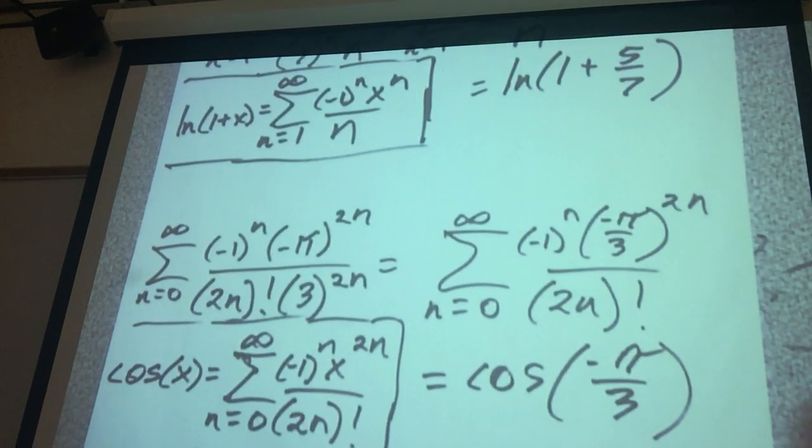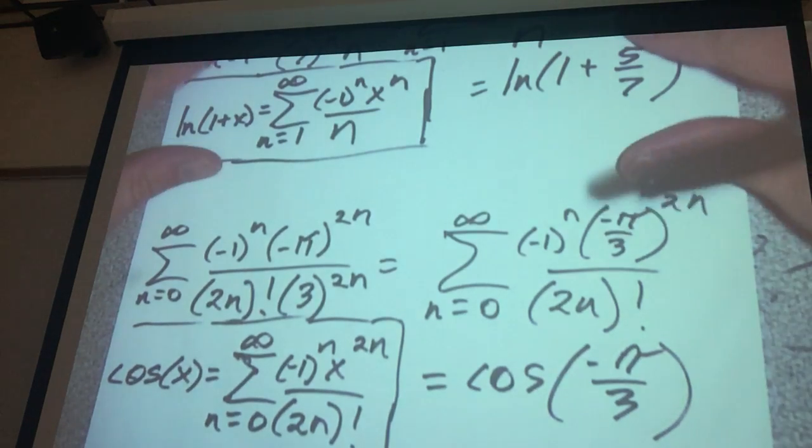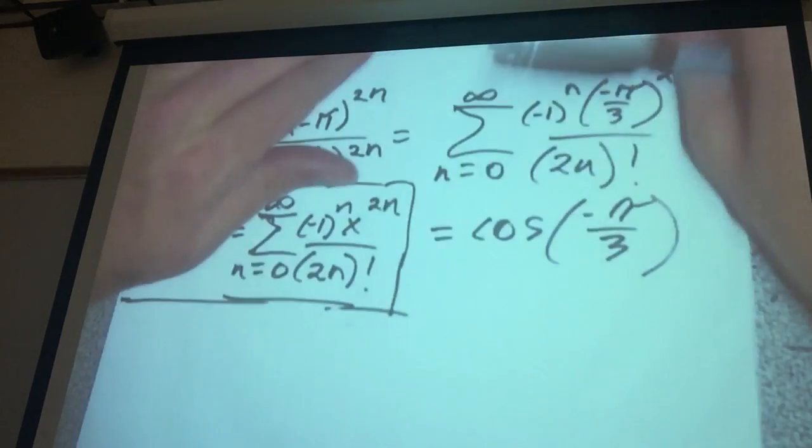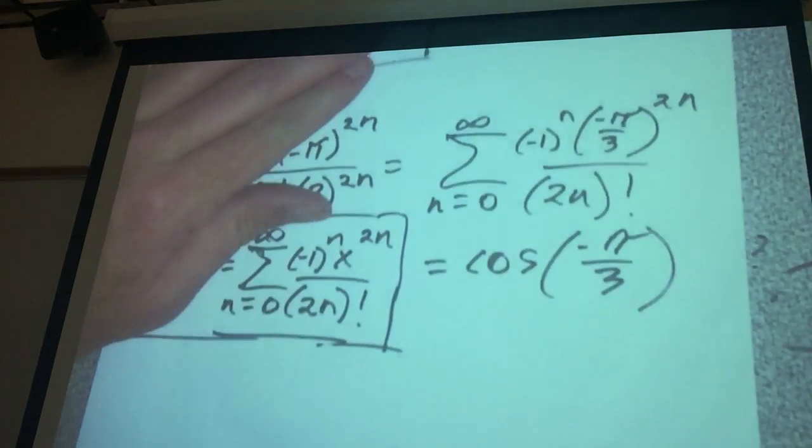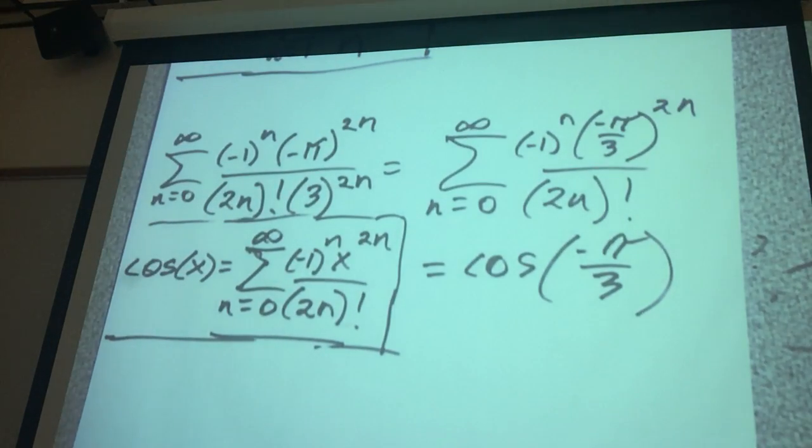So that's just using the known information about the Maclaurin series to calculate those two series. That's all you have to do is just identify the correct Maclaurin series.